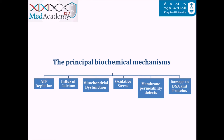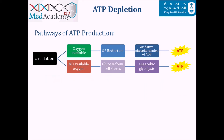Now we address the principal biochemical mechanisms of cell injury. There are six principles, and they are very complex and interconnected. The first is ATP depletion. To understand its depletion, we first need to understand ATP production: when oxygen is available, oxidative phosphorylation produces ATP; without oxygen, anaerobic glycolysis produces ATP but generates a large amount of lactic acid.